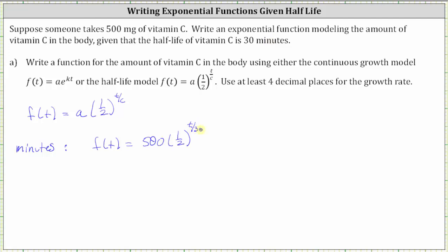The exponent of t divided by 30 should make sense. Notice how when t is equal to 30, the exponent on one-half is one, leaving us with just 500 times one-half, which is half the amount, or 250.